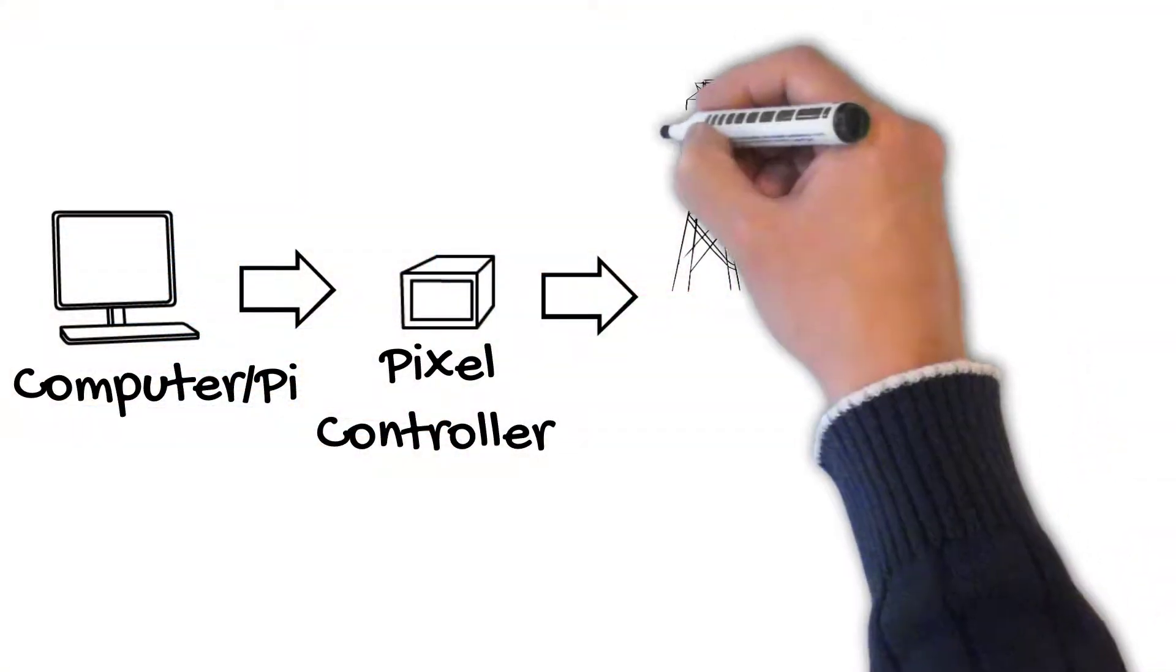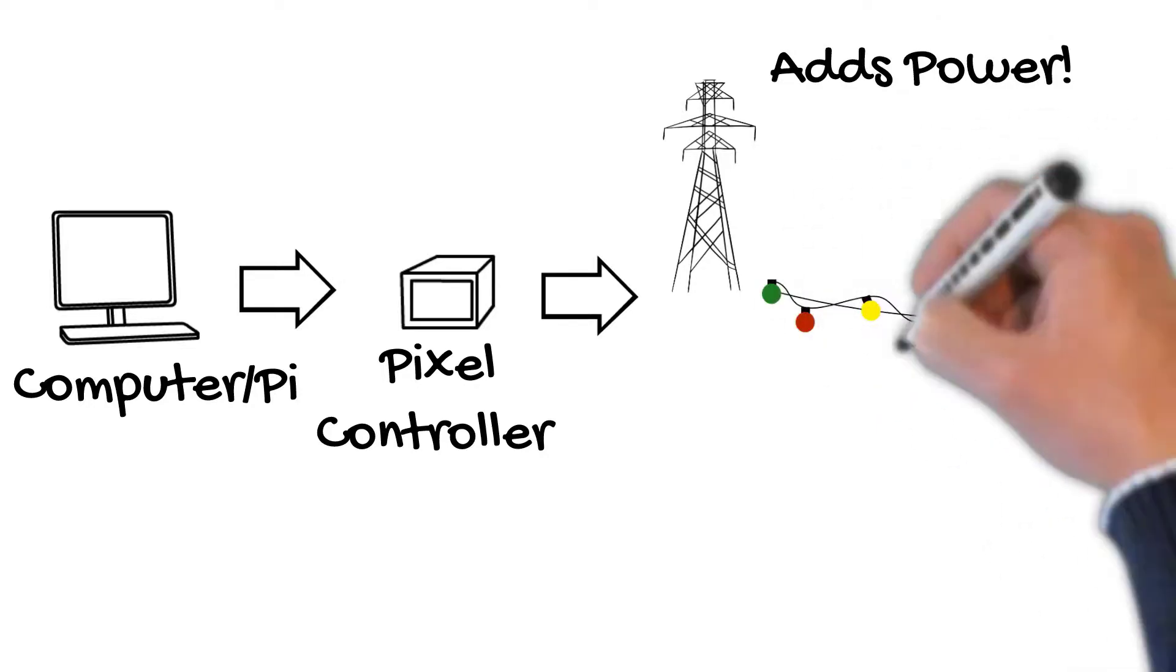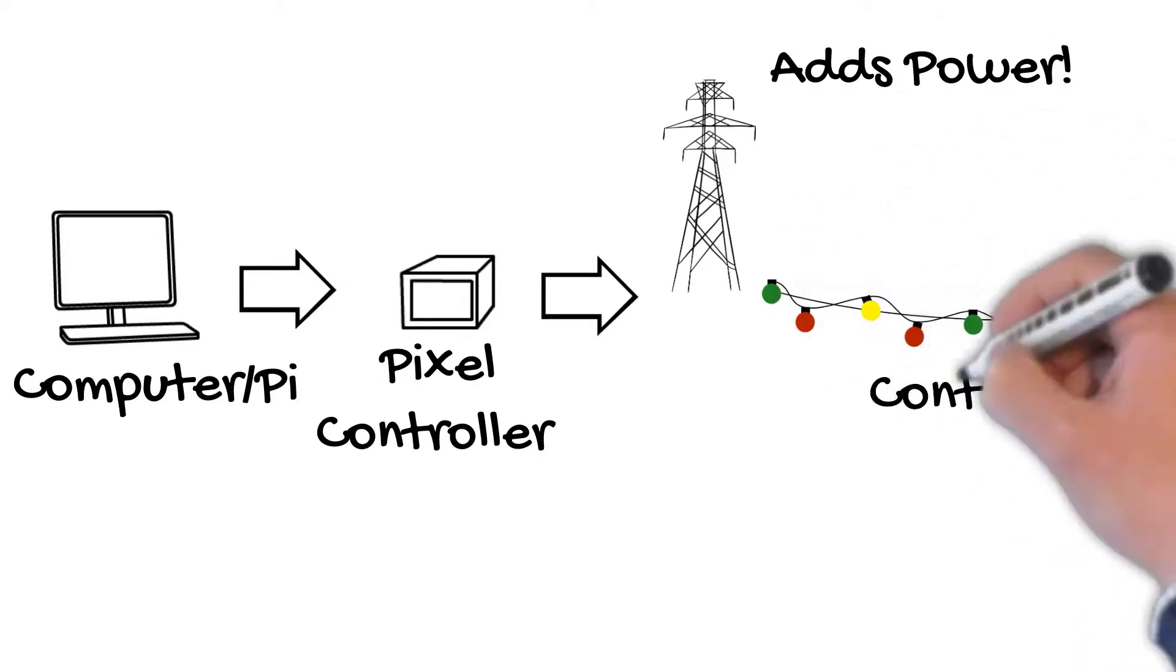Usually in this hobby these days, that's called WS2811, or 2812, or 2815 - they're all very similar. But one of these pixel type protocols, at which point the controller is able to output directly to these pixels. And along with some power, you've got lights.